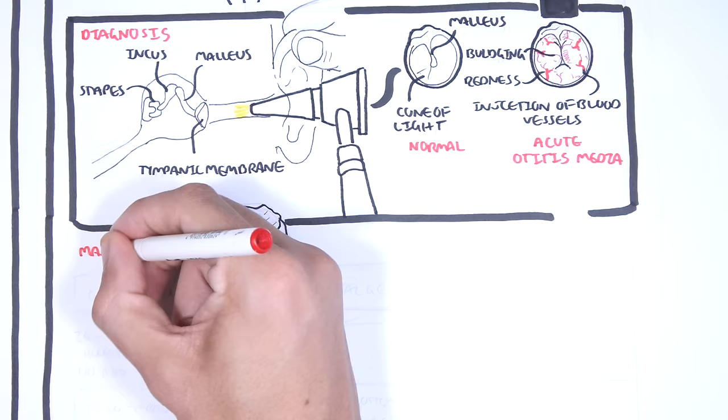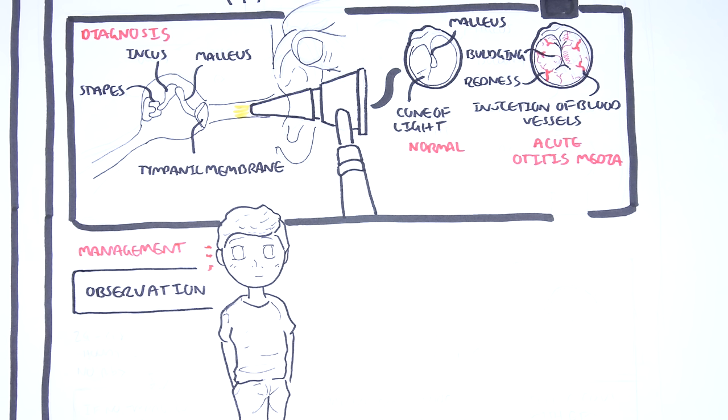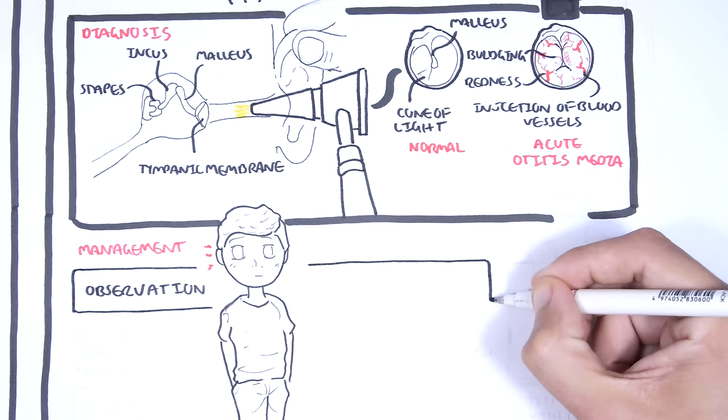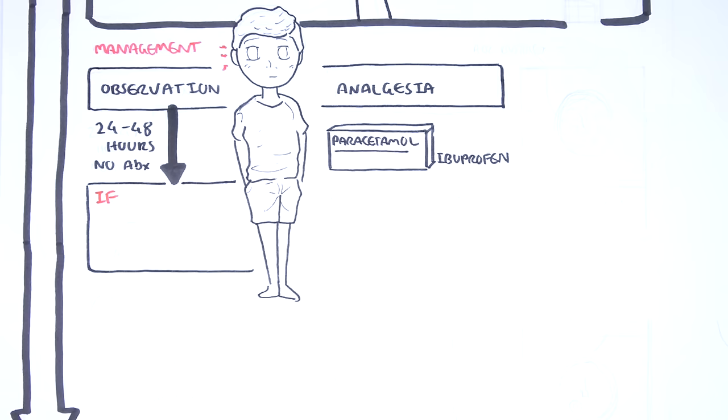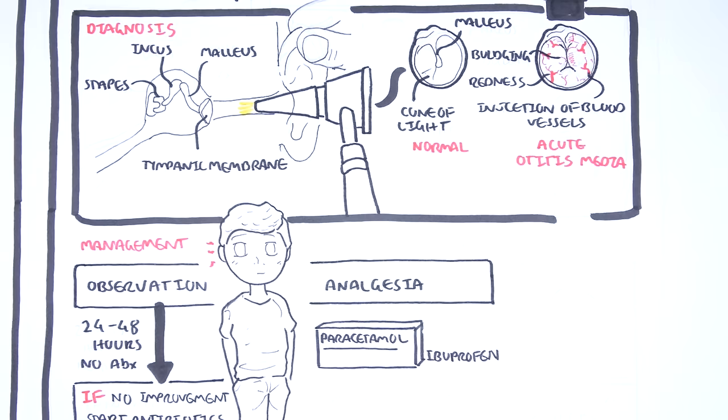Once diagnosis of acute otitis media is suspected, a period of observation is recommended. Typically, 24 to 48 hours is recommended. Exceptions exist for high-risk groups and persistent infections. The overuse of antibiotics may contribute to increasing antimicrobial resistance. Pain and fever in acute otitis media should be controlled with paracetamol or ibuprofen. If symptoms do not improve with analgesia after 48 hours, then a course of antibiotics is commenced. Typically, this is amoxicillin. Decongestants and antihistamines are not beneficial in the treatment of acute otitis media.